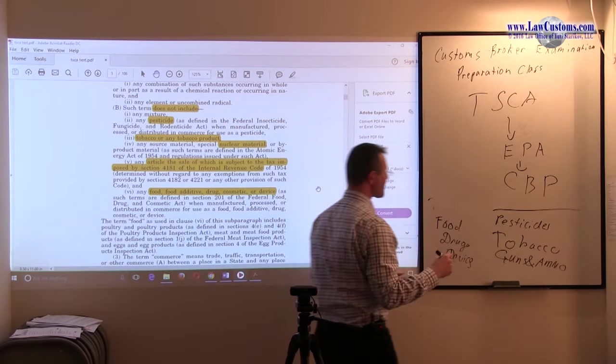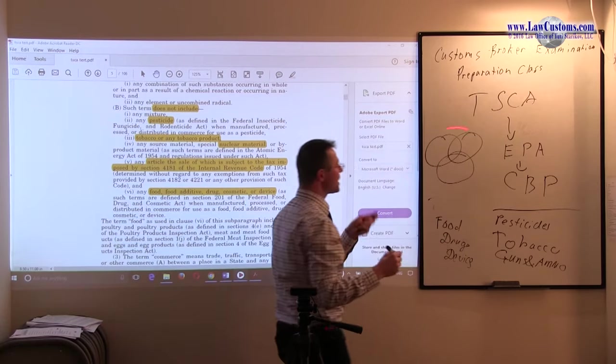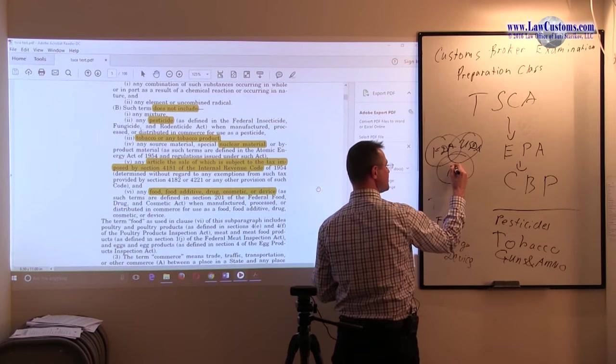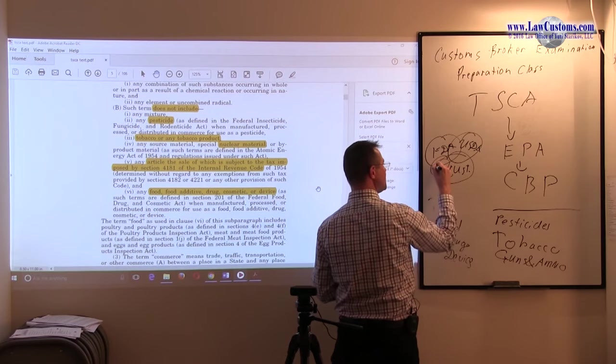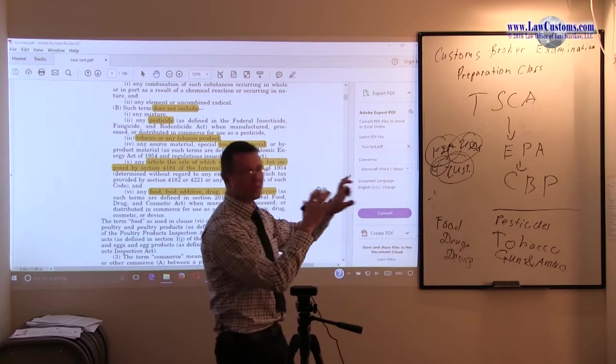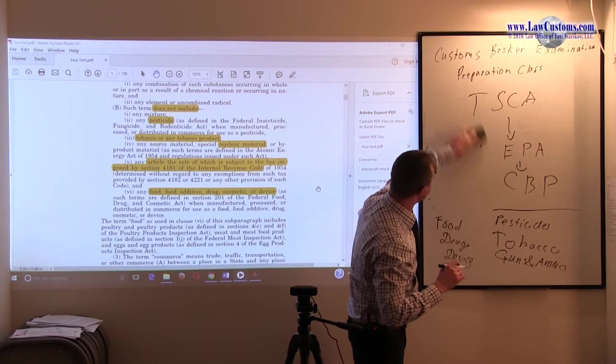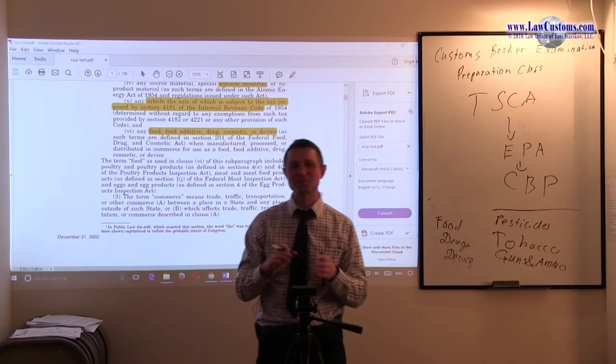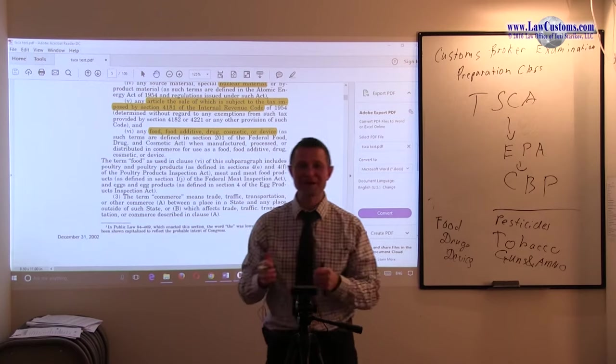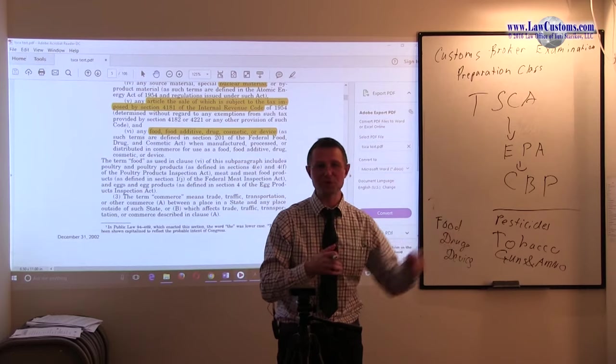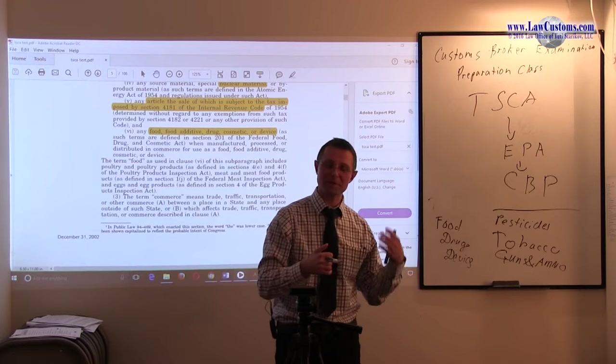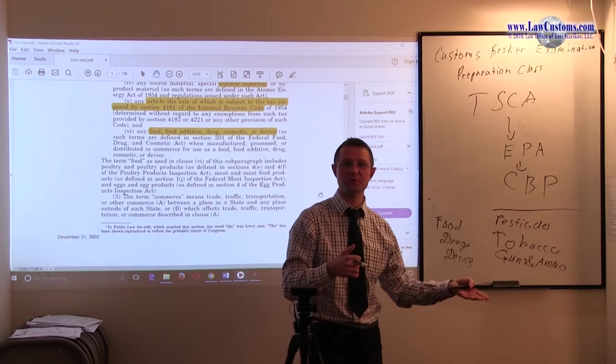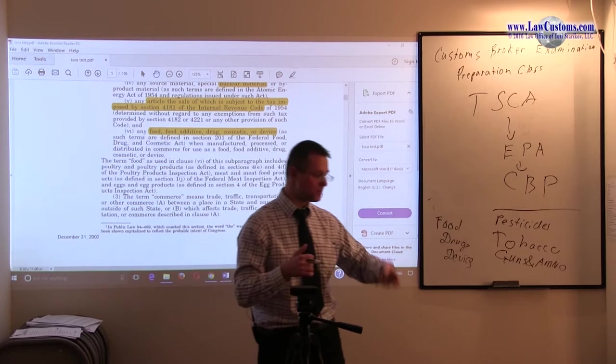We see many agencies with overlaps: FDA, USDA (United States Department of Agriculture), Customs, and EPA. It can get messy, but one responsibility of a licensed customs broker is to navigate this maze and understand who asserts particular jurisdiction over a product. If you know which agency has jurisdiction—for example, USDA—you apply USDA rules. If it's FDA, you apply FDA rules.